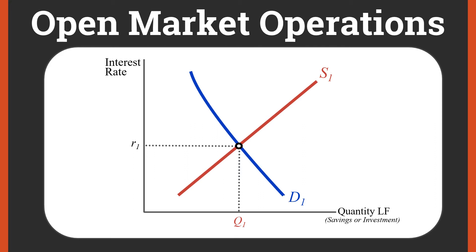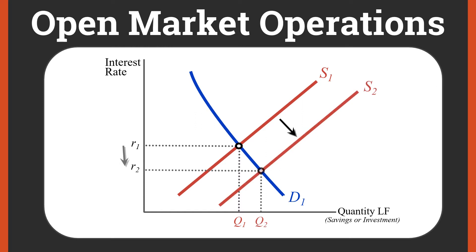What happens in our loanable funds market is we see an increase in the money supply. This increase in the money supply provides banks with additional reserves, and the loanable funds market then has a shift out of the supply curve, which decreases the interest rate we face in this economy.